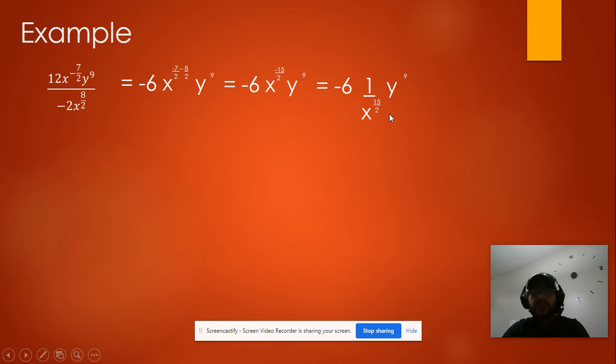Now we can simplify this. Negative 6 times 1 will be negative 6 times y to the 9, negative 6 y to the 9. And we leave the denominator as x to the 15 over 2. So that's how you simplify this expression.